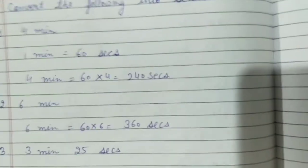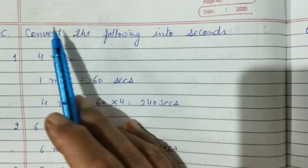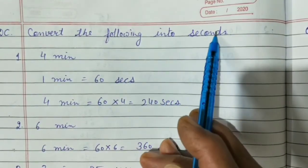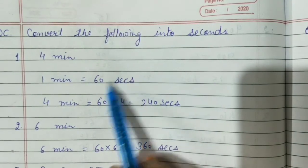Now Question C. Convert the following into seconds. Seconds. Read the question carefully. Convert the following into seconds. We have to convert to seconds. You know in 1 minute how many seconds? 60 seconds.